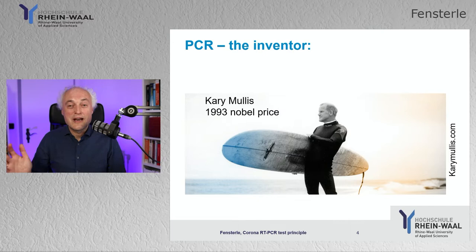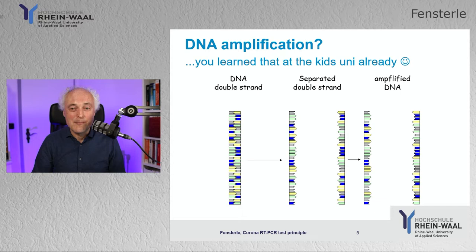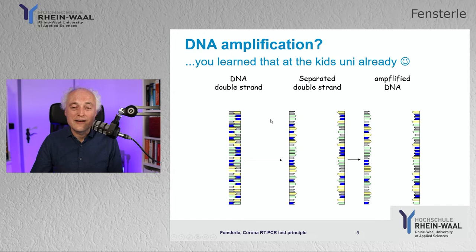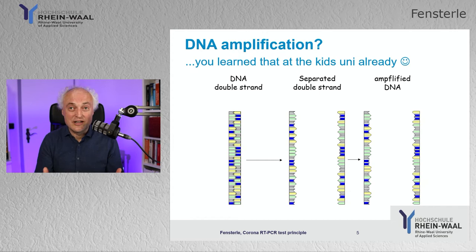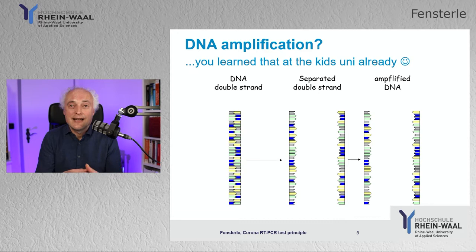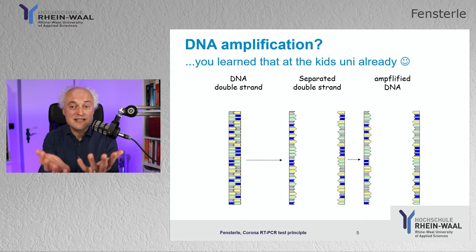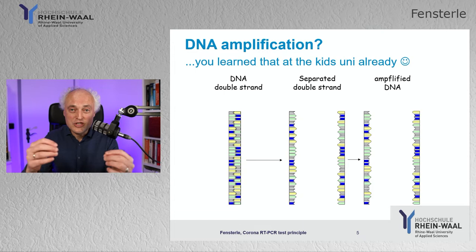Before we talk about PCR, we should talk about how a cell doubles DNA — a process called DNA replication. We start with double-stranded DNA, the strands are separated, and then amplified. There are four different bases — A, C, T, G — and two colors always match together: A always matches to T, and C always matches to G. The polymerase enzyme just needs to look for which molecule fits and synthesizes the complementary strand.